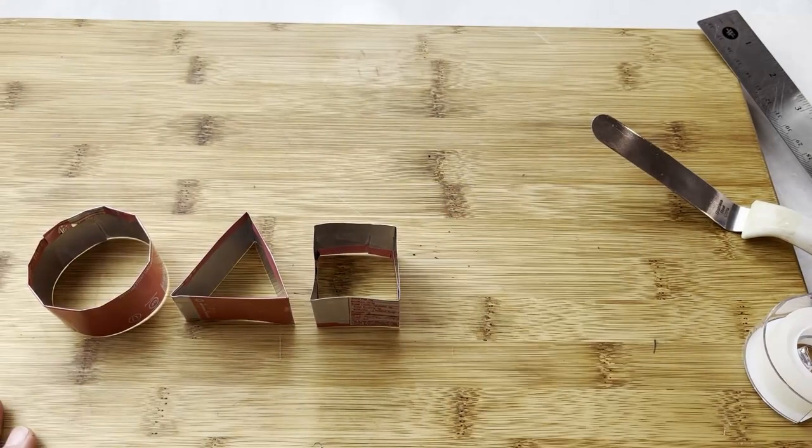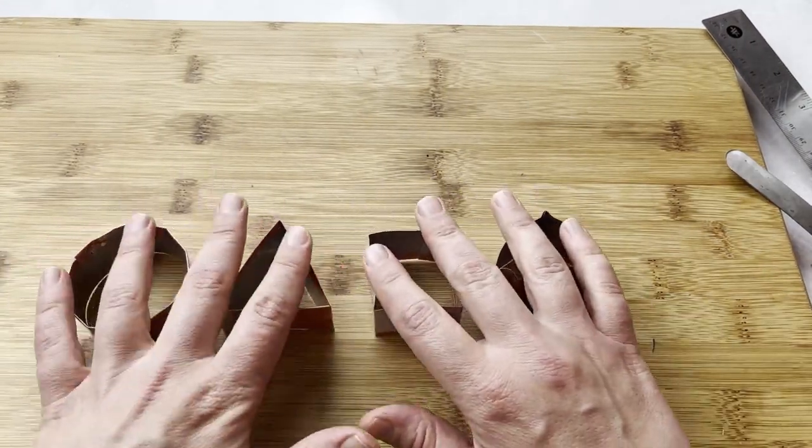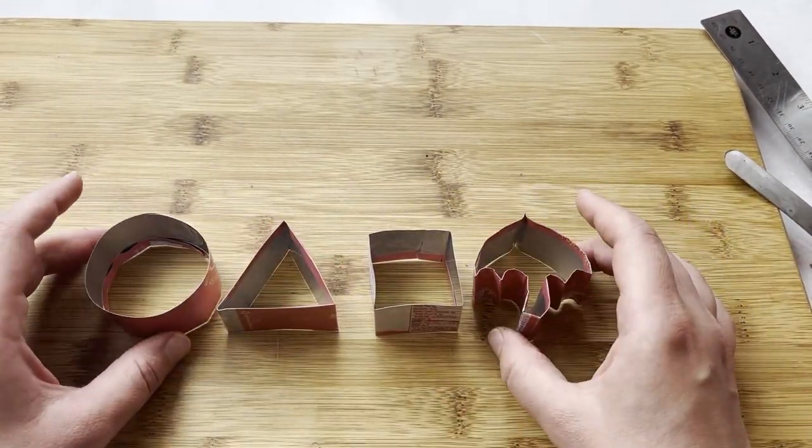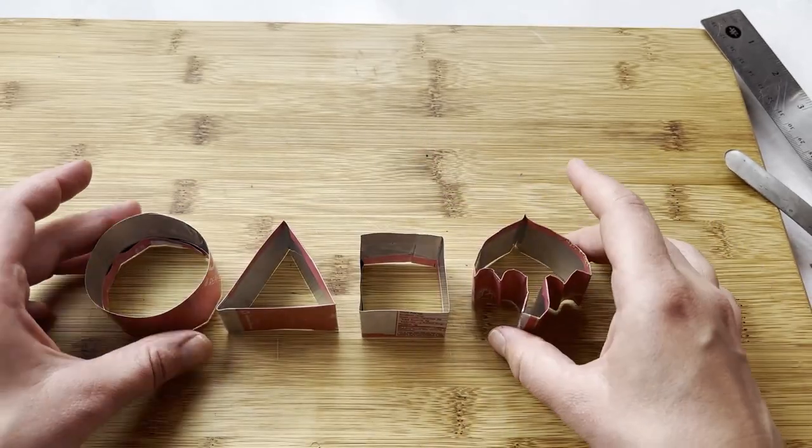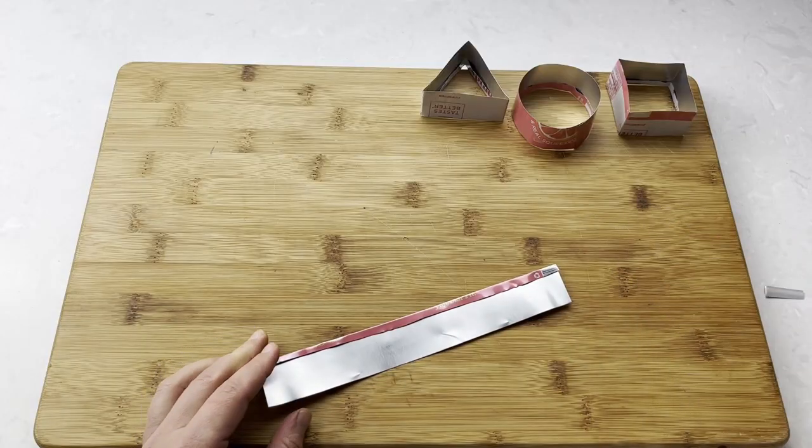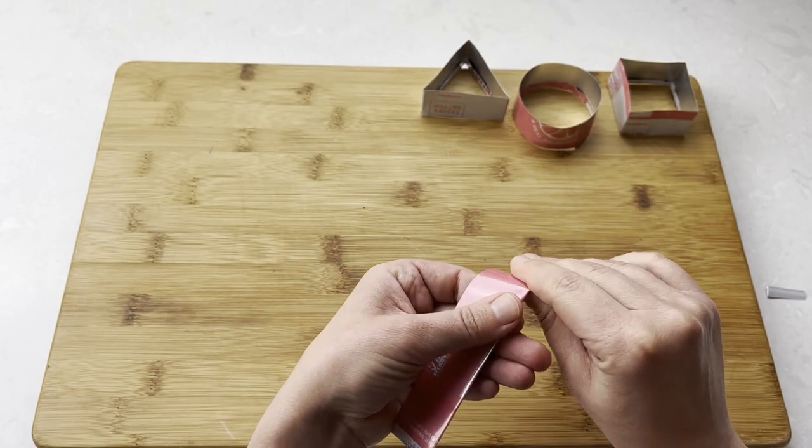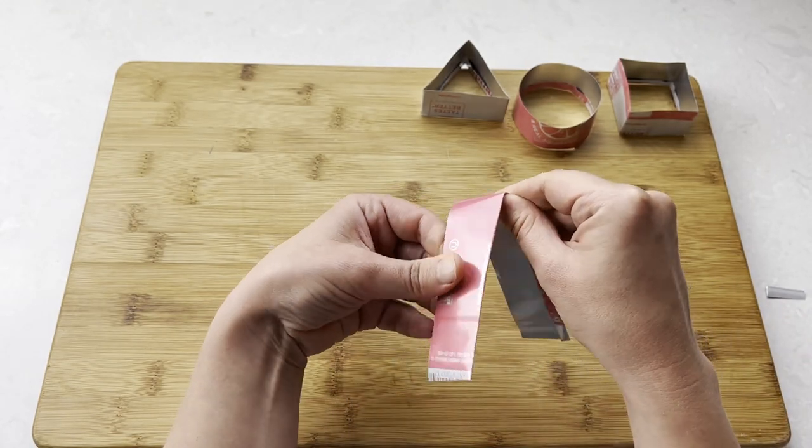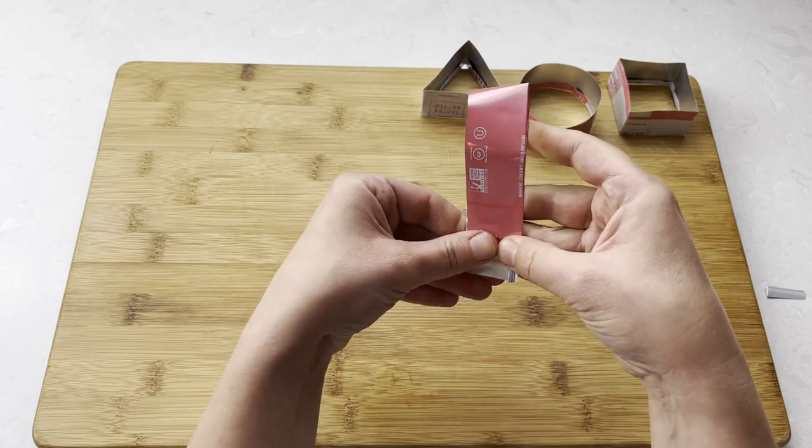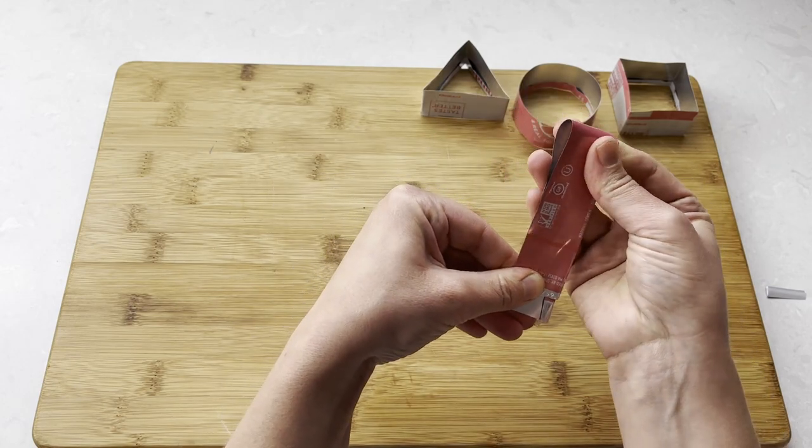So now all our easy shapes are done, and now we must bring out our best origami skills to fold an umbrella cookie cutter. We are starting with the metal strip, and we're going to fold it, but not exactly in the middle. The fold is a little bit off center in order to make a folding edge.